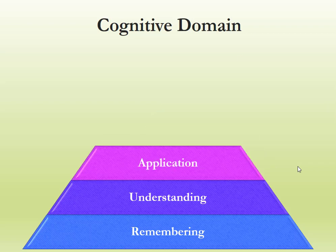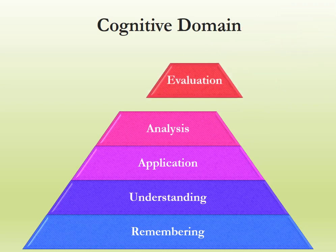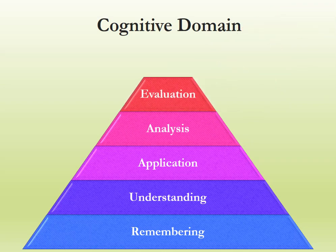The third is application. Application means if a student can remember something, then he can move to the second stage — understanding — and once a student can understand, then he can move to the third stage called application. Application means: can he or she apply the concept in real life? Then comes analysis, then the fifth is evaluation, and the sixth is creating. The pyramid means we know and remember so many things, but we understand very few — this is the cognitive domain pyramid.